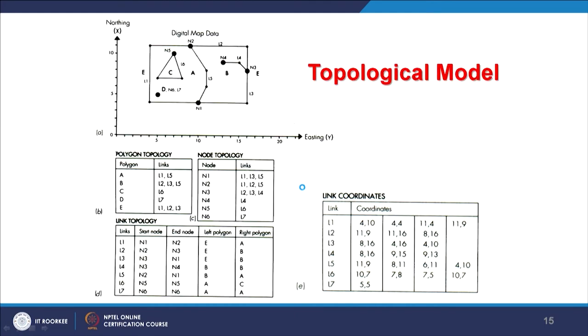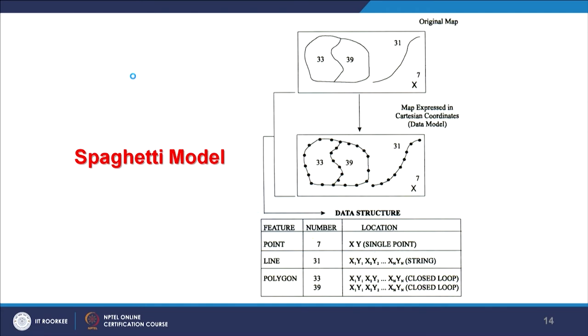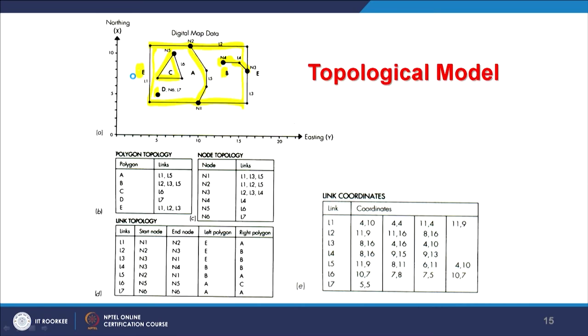In the topological model with a similar example — point data, line data, and polygon data where C, A, and B are polygons and E is the outside polygon — four tables are used to store information. More space is required, but the polygon, vector, and line data remain intact with minimum errors. Errors due to non-topological modeling will not be present in the system at all once topology has been constructed.